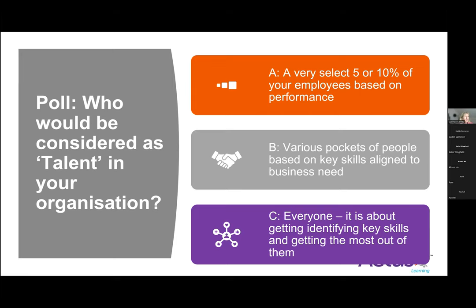So 65% of those who voted say that talent is about everyone — identifying key skills and getting the best out of them. But actually the other options are relevant to some organizations too, maybe overtly or otherwise. Mark is saying the exclusive approach is sometimes easier to understand than the inclusive one, and that is one of the issues I have with the term talent — it can feel really exclusive. Steve is saying it should be everyone but it's usually one of the other two.